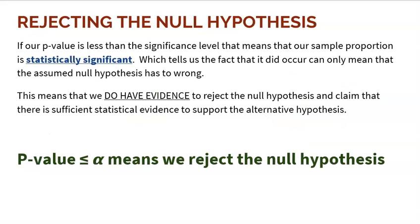The two conclusions you're going to make need to be really nicely worded. The first possible conclusion is rejecting the null. If our p-value is less than the significance level, that means our sample is statistically significant, which tells us that the assumed null hypothesis is wrong. We have evidence to reject the null and claim sufficient statistical evidence to support the alternative hypothesis.